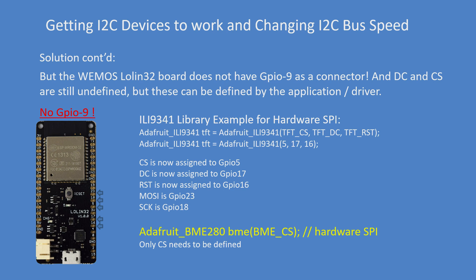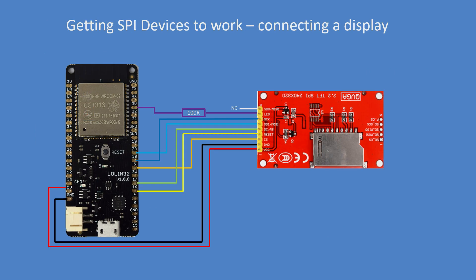For the BME280 example, it only requires chip select, so you just need to put the chip select pin you wish to use into that definition. This is how you would connect it — once I know where VCC, 5 volts, and ground are, I can go ahead and add in the rest of the connections.